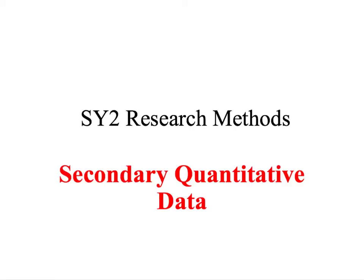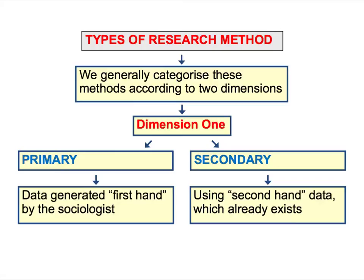Welcome once again to another SY2 screencast. What we're going to look at in this short video is the use of secondary quantitative data in sociological research. In the last few screencasts we've been looking at the main types of primary research methods that sociologists use to gather first-hand data, particularly different types of observational methods and different ways of asking questions. What we're going to start to look at in the next few screencasts is the use of secondary data.